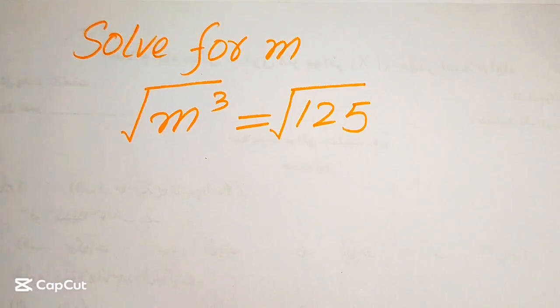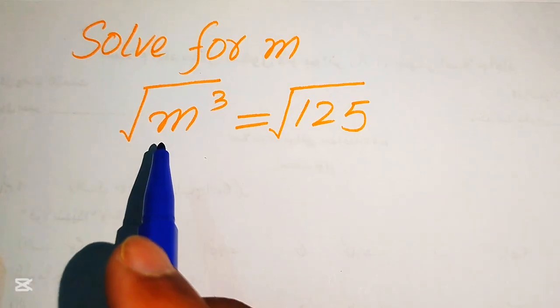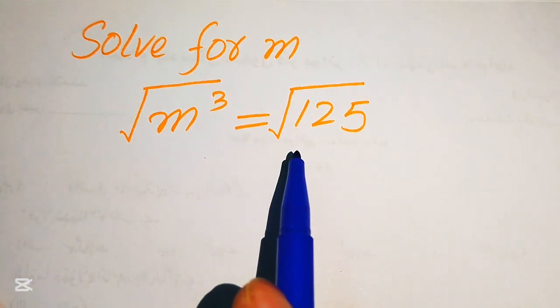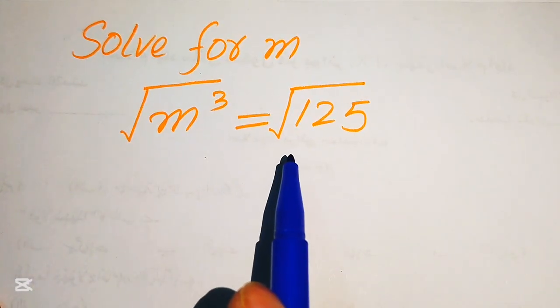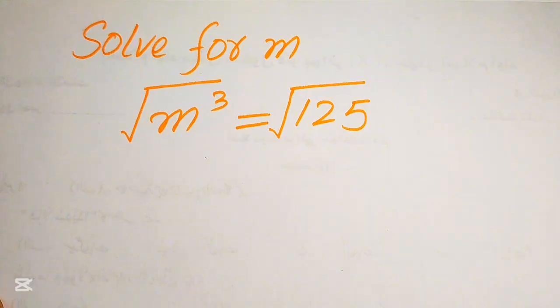Hello everyone, welcome to solve this nice math Olympiad algebra problem. Here we have m cubed and its whole square root equals to 125 square root. We will solve this problem for the values of m.